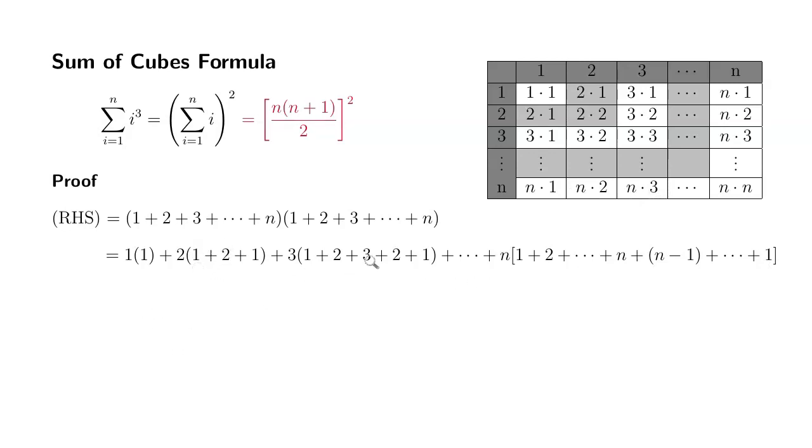Then we try to simplify each parentheses. The first one, I'm going to keep it as 1 times 1. The second one here, I'm going to write as 1 plus 1 is 2, so it's going to be 2 plus 2.